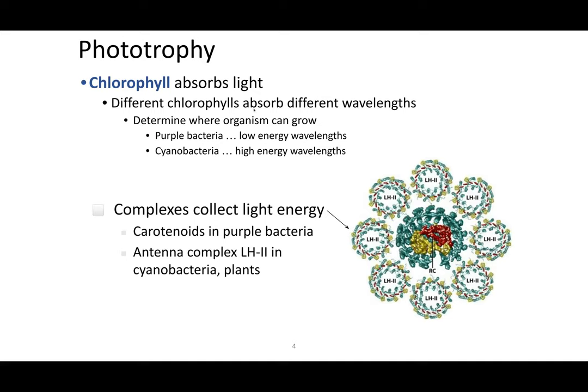Next up is bacterial chlorophyll. It's pretty much the same type of compound as regular chlorophyll, though it does have some structural and chemical differences. This was actually the original chlorophyll on the planet — all plant chlorophyll came from bacterial chlorophyll. There are many different types of bacterial chlorophylls; at least eight different types, and they all absorb light at very different wavelengths.